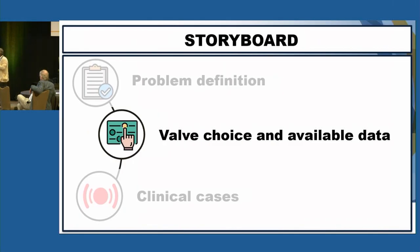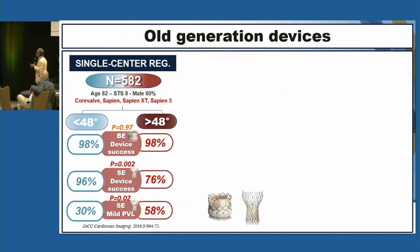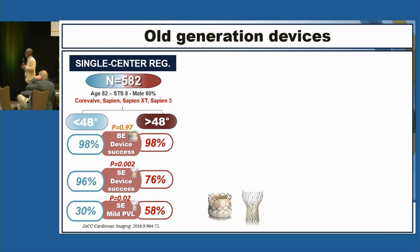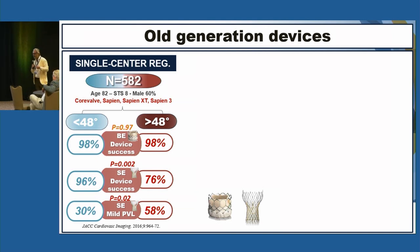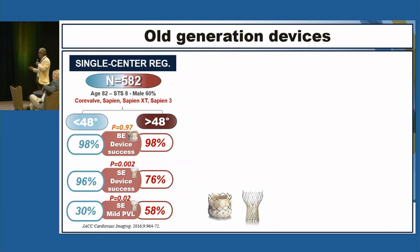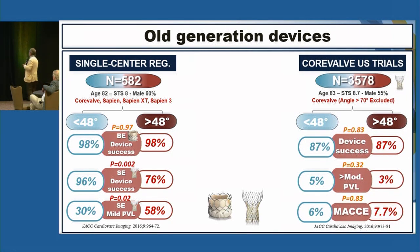Valve choice and available data — let's look at the evidence, starting with old-generation devices. This is a single-center study of 582 patients with a mix of different THV types: CoreValve family or Sapien family. When you group the population into horizontal aorta versus non-horizontal aorta, you find a significant interplay between the horizontal aorta and the type of prosthesis — device success and PVL are worse with self-expandable valves. But we're talking about the previous generation, and this was not consistent with the CoreValve US trial results.